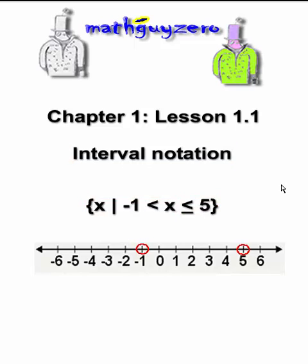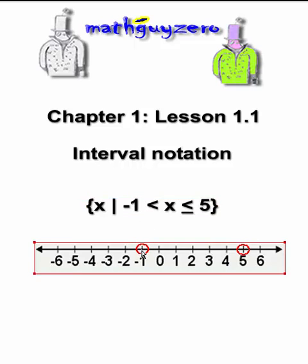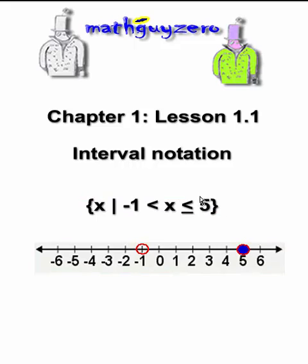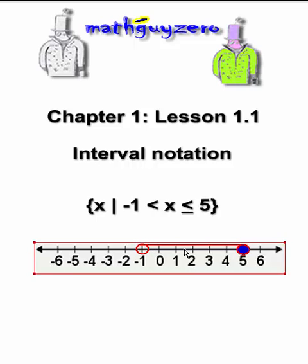Again on a number line, we would put little circles by the delimiter, so negative 1, 5, but we can use the number 5 this time, right? Because x is less than or equal to 5, so we would fill in the circle over the 5, and again draw a line between the two. And x can be any number between these two numbers, including 5 but not negative 1.